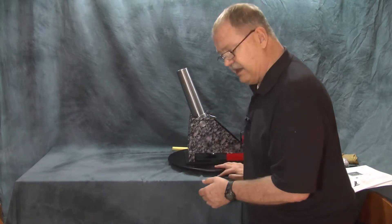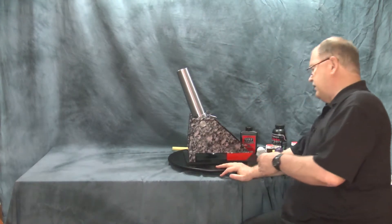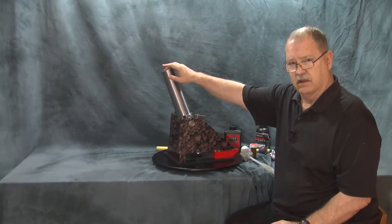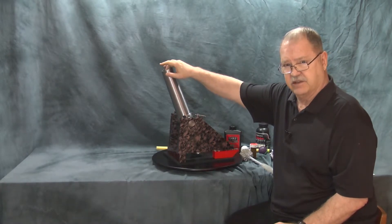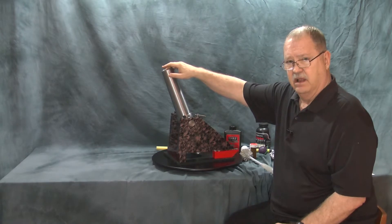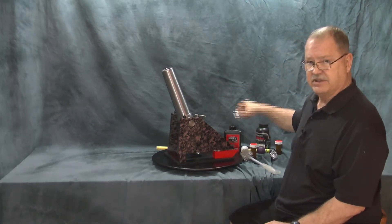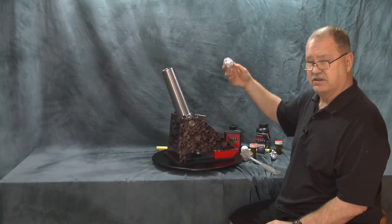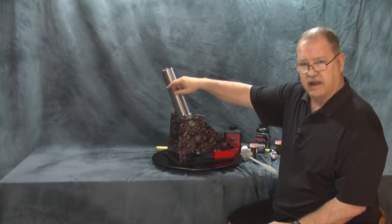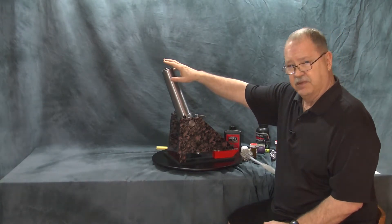What you do want to be very careful of with all black powder cannons is, number one, you don't want to be banging or have things that carry static charges or can create sparks. We never have metal on metal. Now, the aluminum carries no static charge and can't create sparks. So that's safe. But you don't want to be screwing around in here with screwdrivers and things like this. They should be wood.